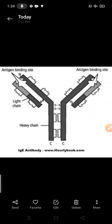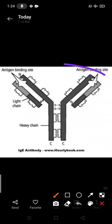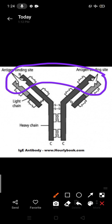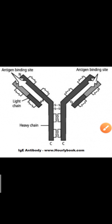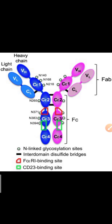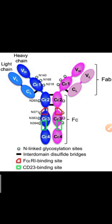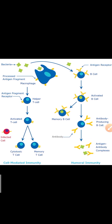All antibodies have different regions. The upper regions are the antigen binding sites, and the lower portion is known as the constant site. C denotes the constant region and V region is known as the variable binding region.